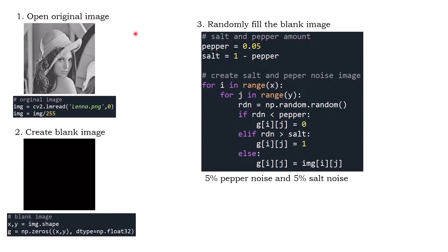This is the step-by-step process for creating an image with salt and pepper noise. First, you need to open or load your image. Here I normalize the original image — this normalization will make the pixel value range from 0 to 1.